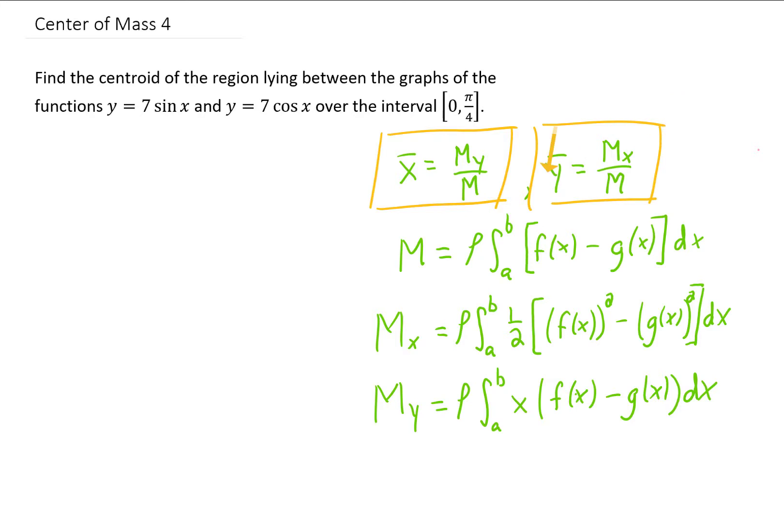Of course, to find m, m sub x, and m sub y, we need to use these integrals down here. One little tip right off the bat, if we're trying to find a centroid and we're not given any specific density, then we can just assume that the density is constant, and because this density is going to cancel out of all these calculations, we can just call the density 1.